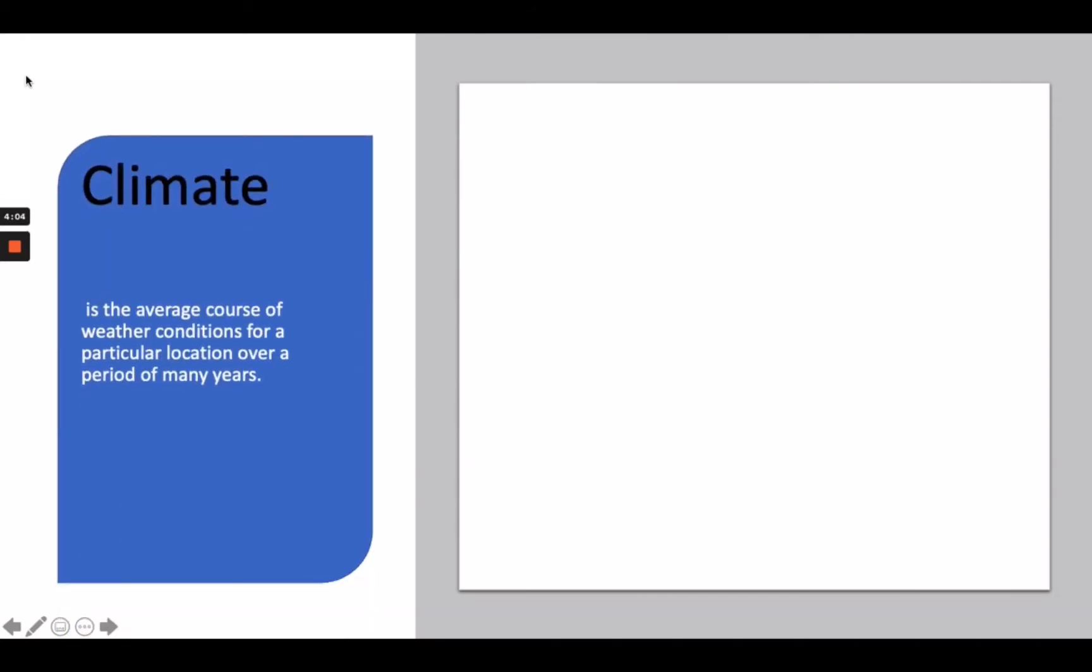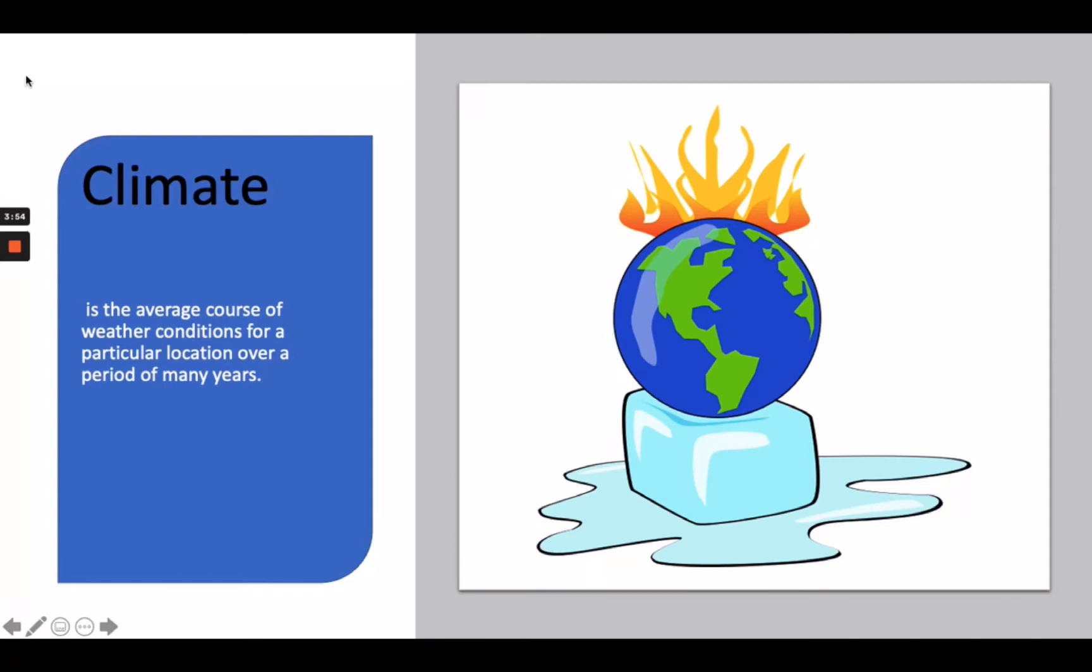As our previous lesson, climate is the average course of weather conditions for a particular location over a period of many years. But what causes the climate to change?